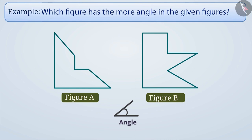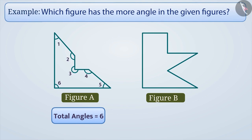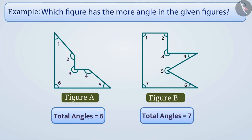In figure A, we see there are 6 corners, so this figure has a total of 6 angles. Similarly, in figure B, we see that there are a total of 7 corners, so we can say that this figure has a total of 7 angles. Now we can say that figure B has more angles.